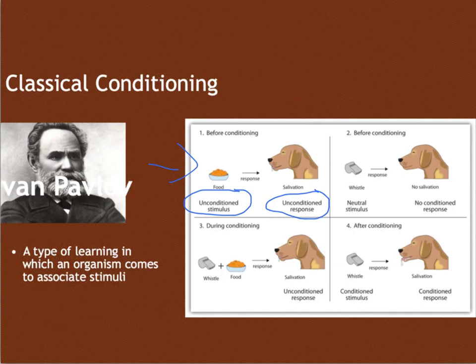When we take a neutral stimulus into consideration, like a whistle, we call this a neutral stimulus because it does not evoke a natural response. Humans, dogs, and animals do not have natural responses to a bell. If I were to stand in our classroom and blow a whistle, would you automatically start salivating or sweating? No — you would just stare at me and think, why is he blowing a whistle? There's no natural response to a whistle, so that's why we call it a neutral stimulus.